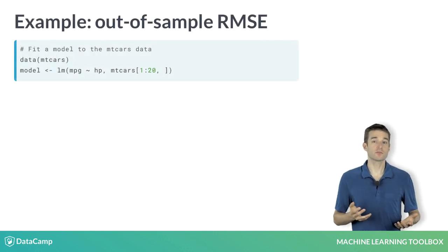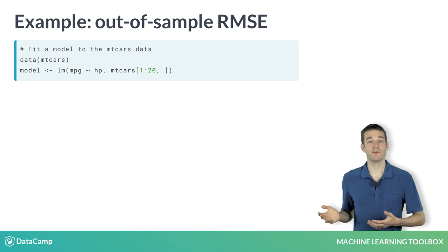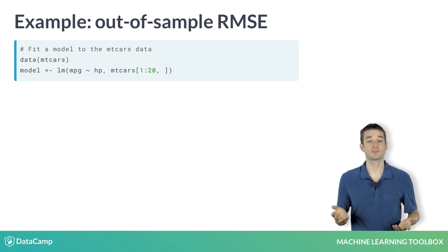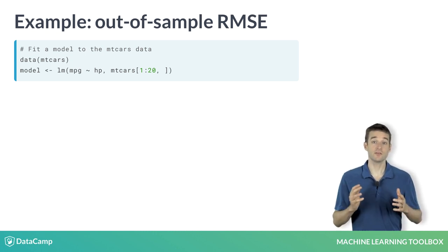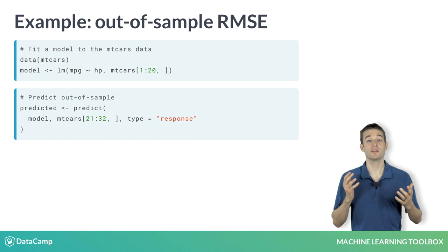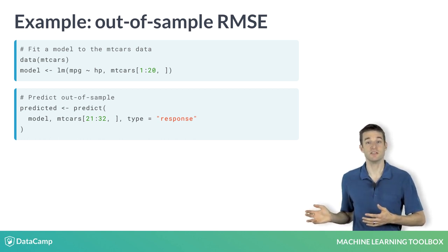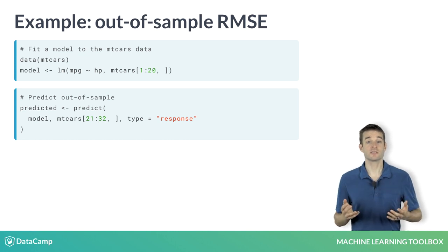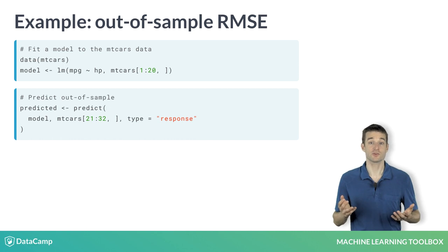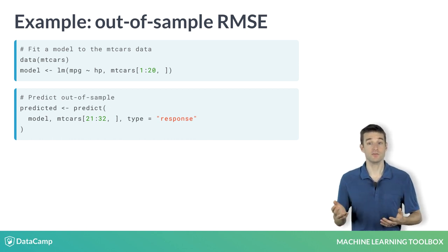Let's walk through a simple example of out-of-sample validation. We start with a linear regression model fit on the first 20 rows of the mtcars dataset. Next, we make predictions with this model on a new dataset — the last 12 observations of the mtcars dataset. The 12 cars in this test set will not be used to determine the coefficients of the linear regression model, and are therefore a good test of how well we can predict on new data.